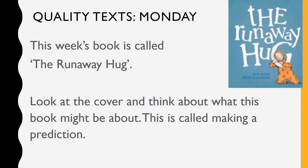This week's book is called The Runaway Hug. Have a look at the cover and think about what this book might be about. This is called Making a Prediction. So we make a prediction when we look at the picture. There's only a very small picture on today's book and it looks like it's showing a little girl wearing her pyjamas, and it looks like she's giving that letter a hug. Maybe there's also a clue in the title, The Runaway Hug.